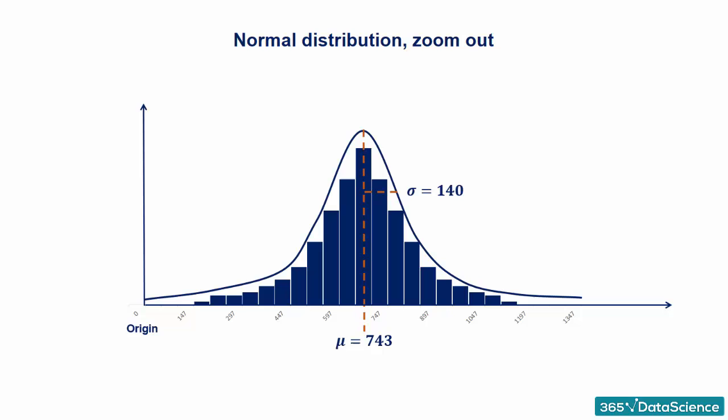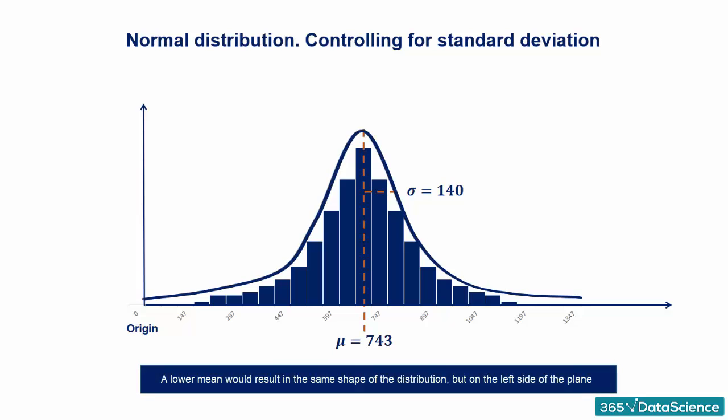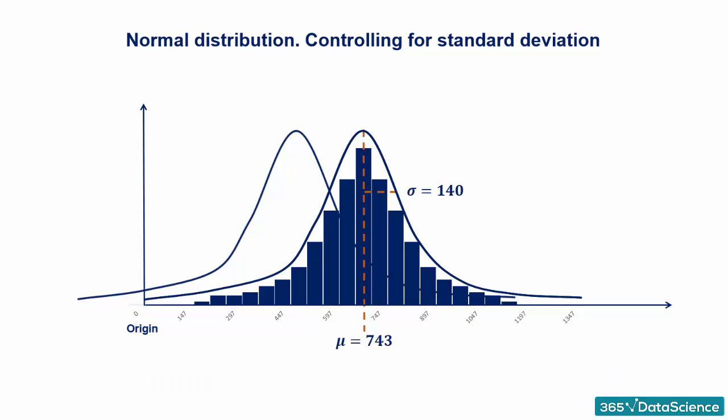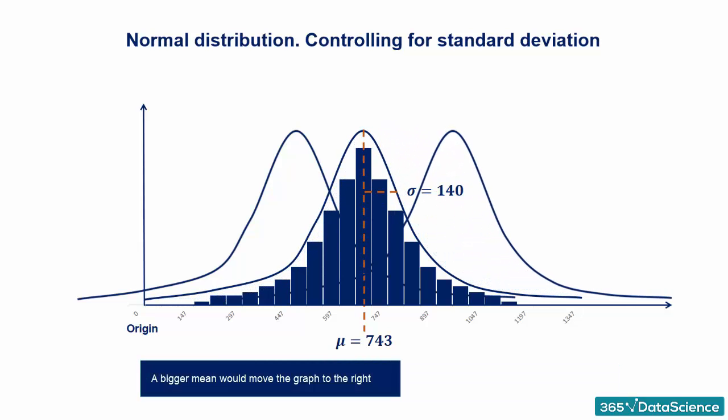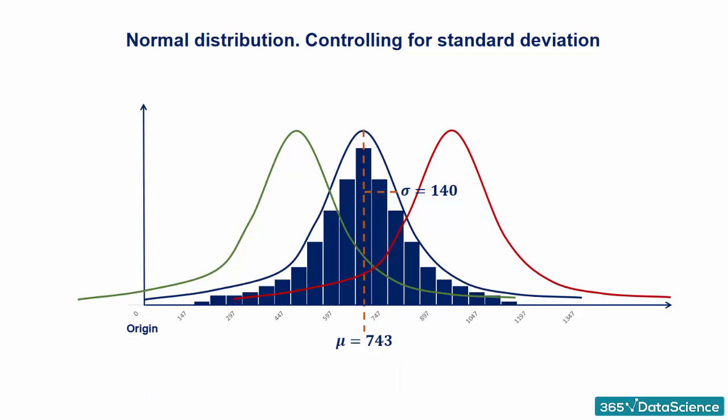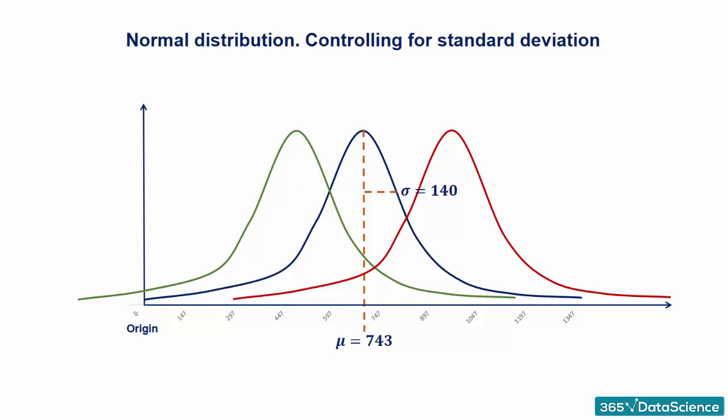Keeping the standard deviation fixed or, in statistical jargon, controlling for the standard deviation, a lower mean would result in the same shape of the distribution, but on the left side of the plane. In the same way, a bigger mean would move the graph to the right. In our example, this resulted in two new distributions. One with a mean of 470 and a standard deviation of 140, and one with a mean of 960 and a standard deviation of 140.